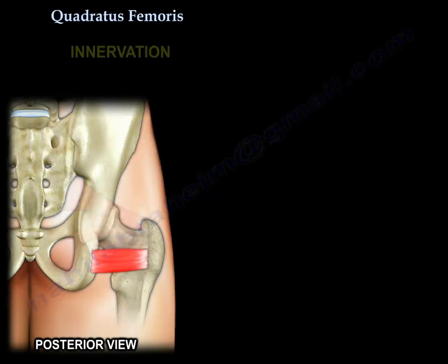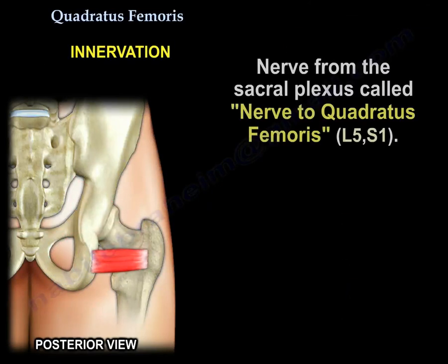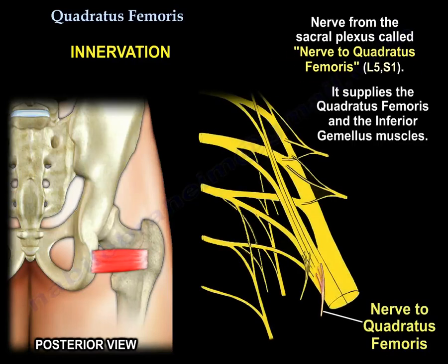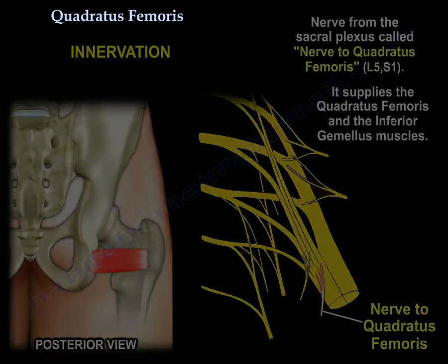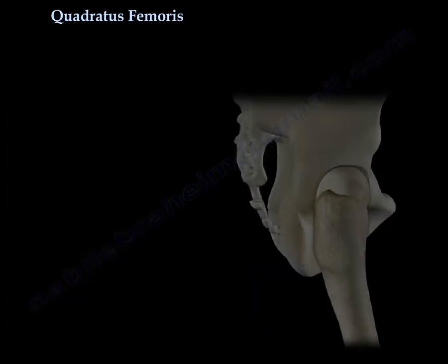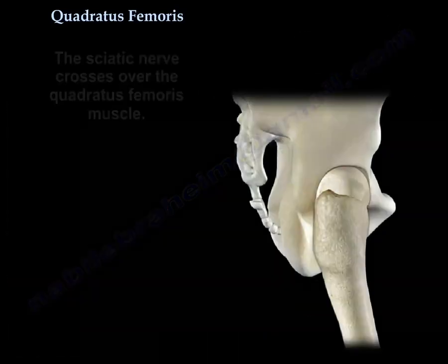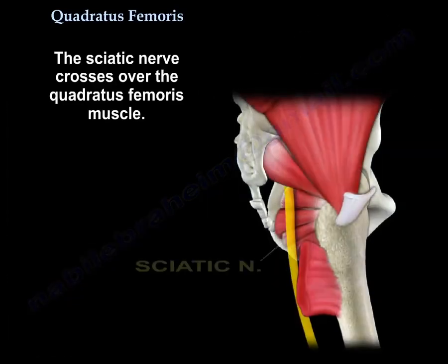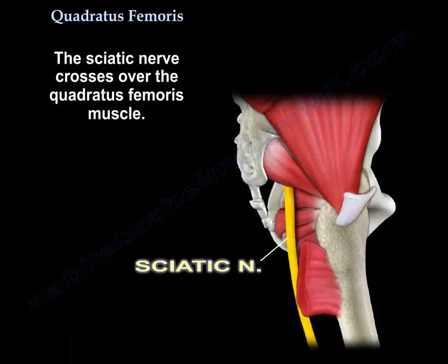It is innervated from the sacral plexus by a nerve called the nerve to the quadratus femoris. The sciatic nerve crosses over the quadratus femoris muscle.